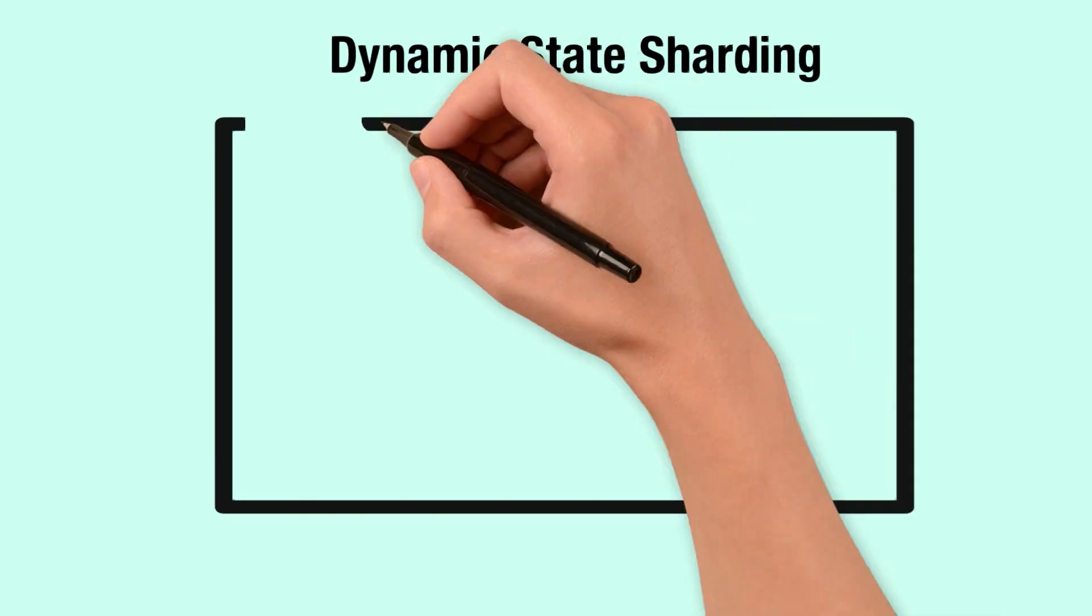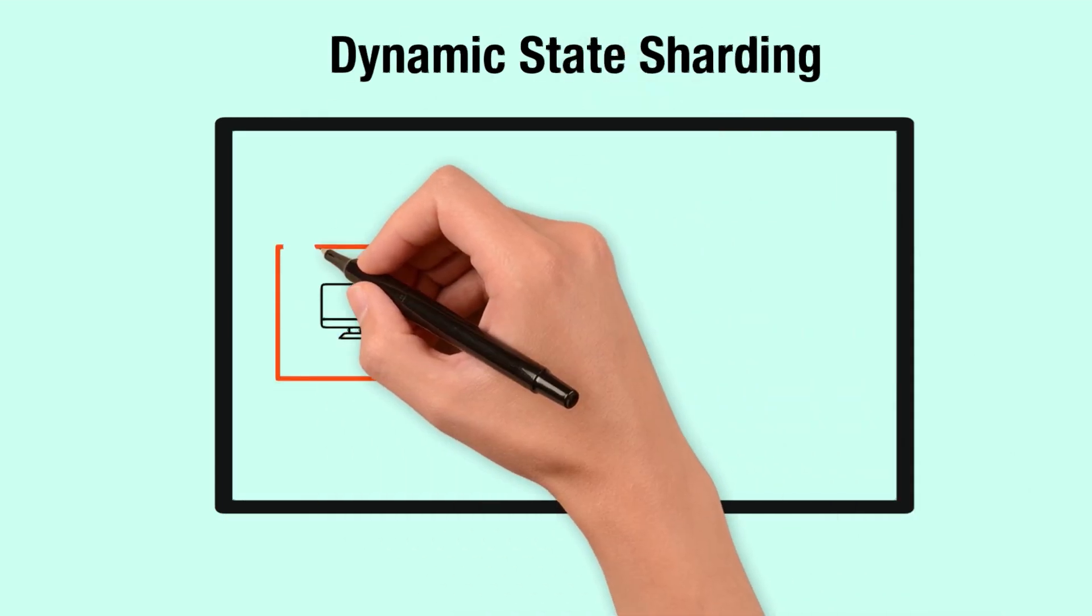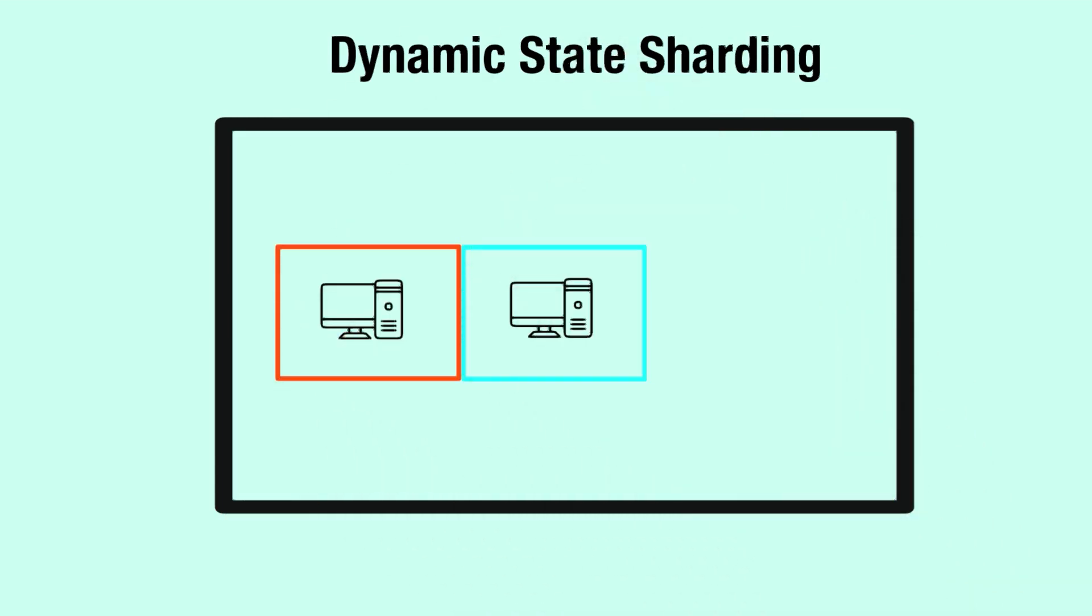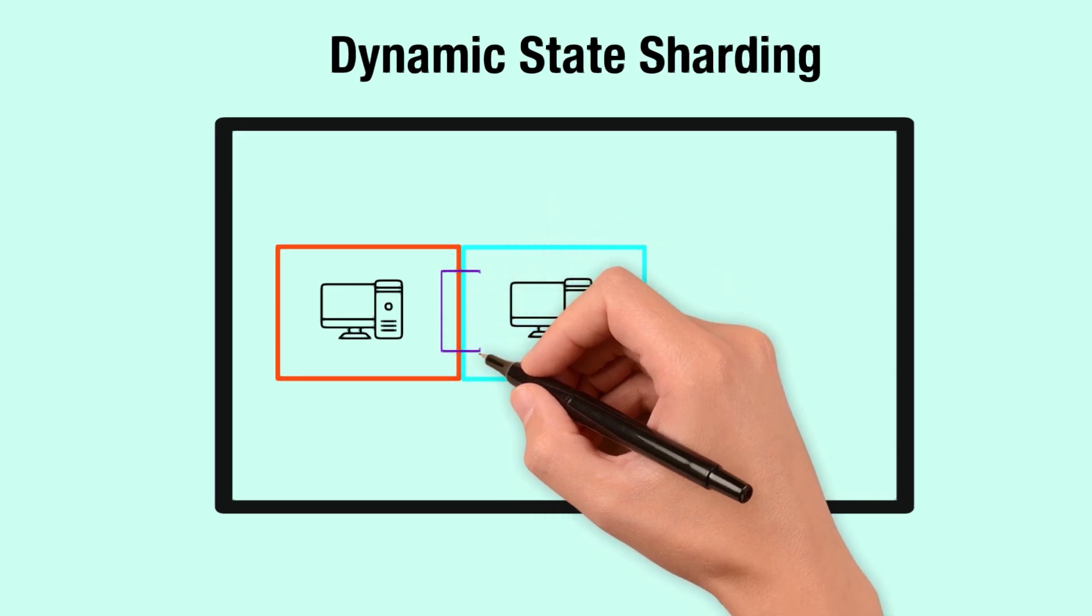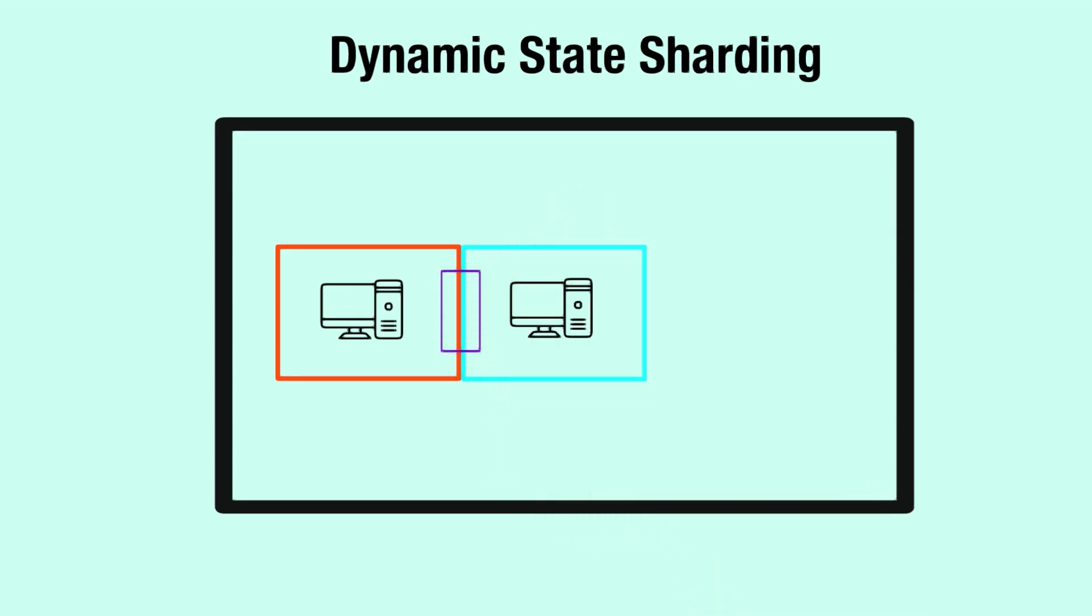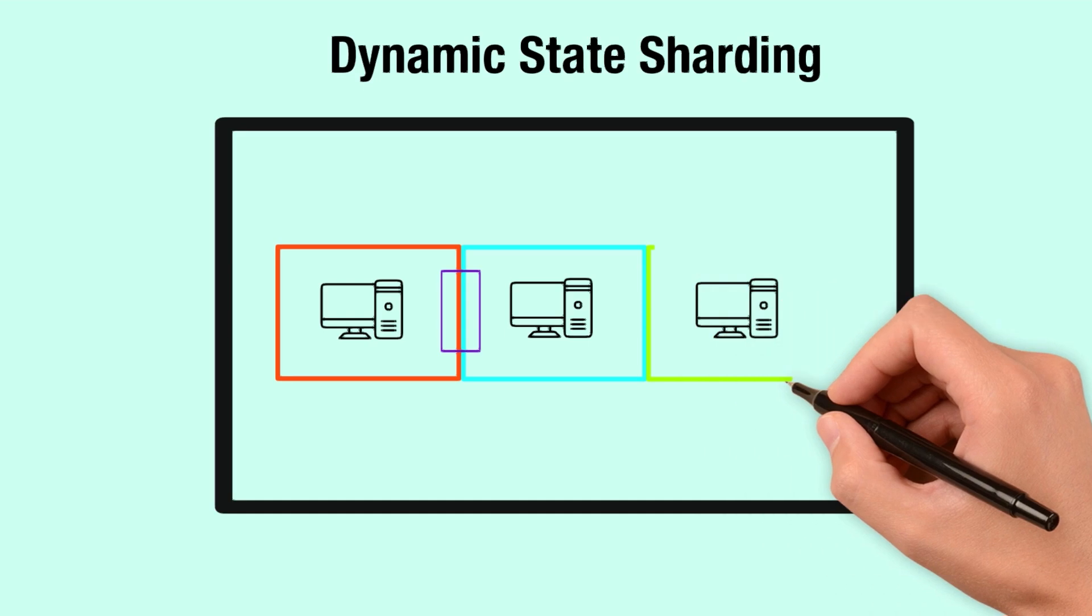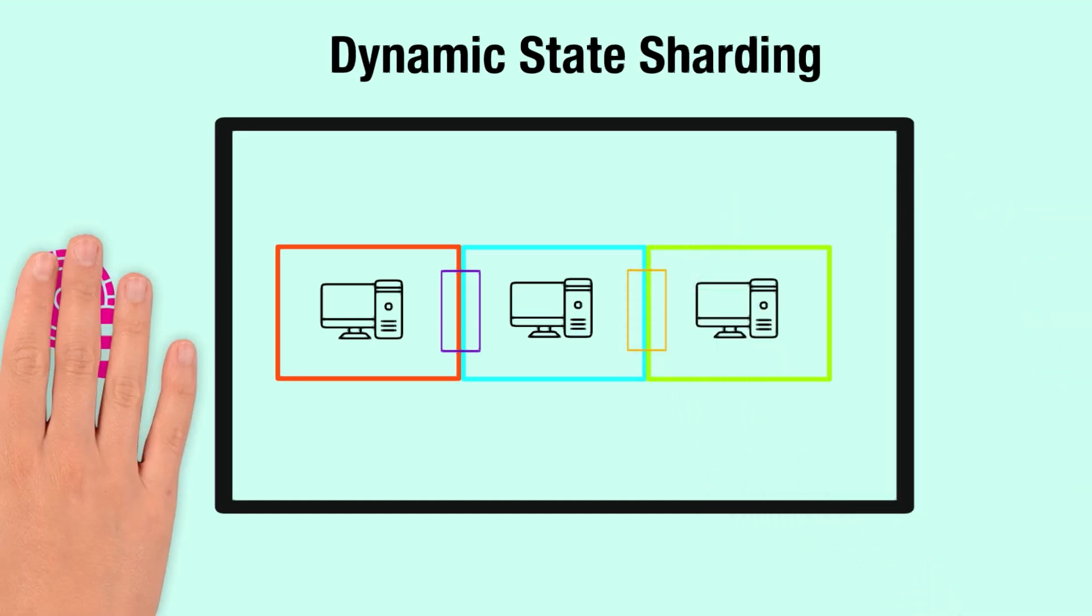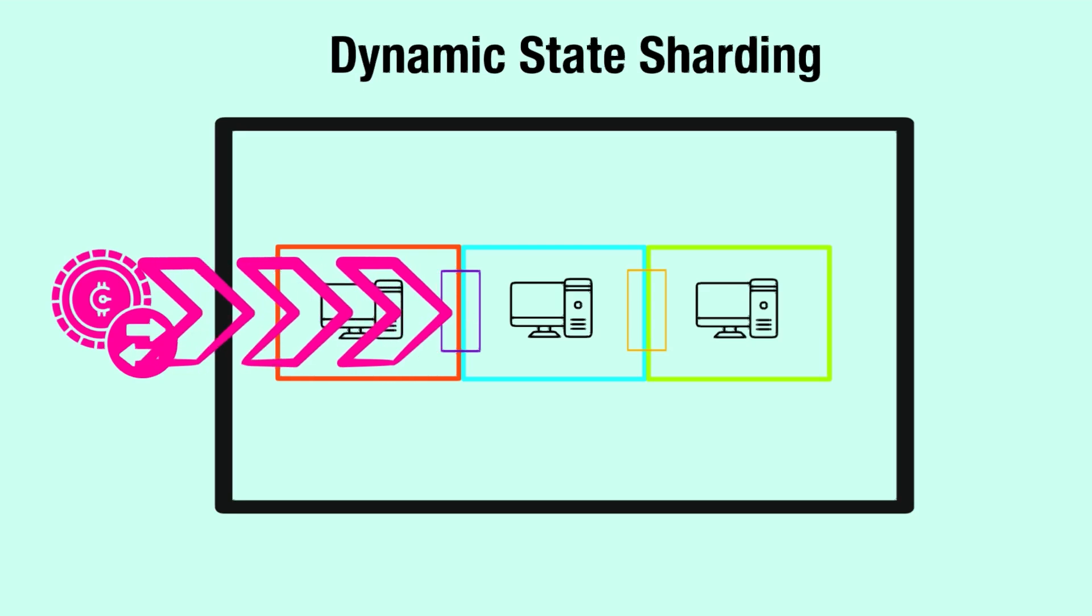Dynamic state sharding allocates different equal-sized partitions to each node. No two nodes hold the same partition, but there is sufficient overlap between the partitions to ensure the desired amount of redundancy. This approach makes it possible to immediately make use of new nodes and also does not break composability.